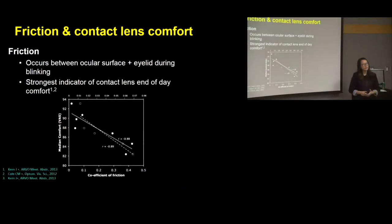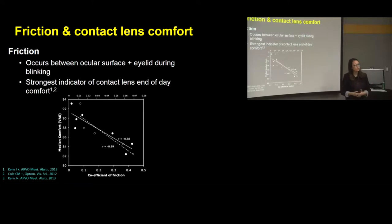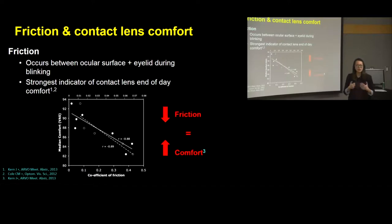When we blink, there are significant frictional forces that act on the cells of the ocular surface as well as our eyelid. When we wear contact lenses, these frictional forces are actually even higher. This is important because contact lens friction is the strongest indicator of contact lens comfort, meaning that the lower the friction of a contact lens, the more comfortable it is to wear.